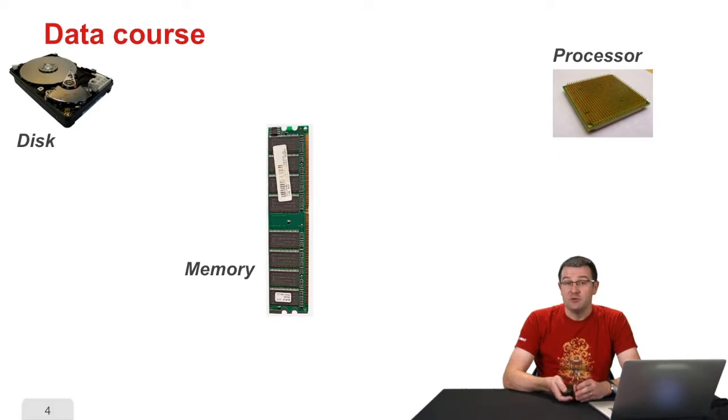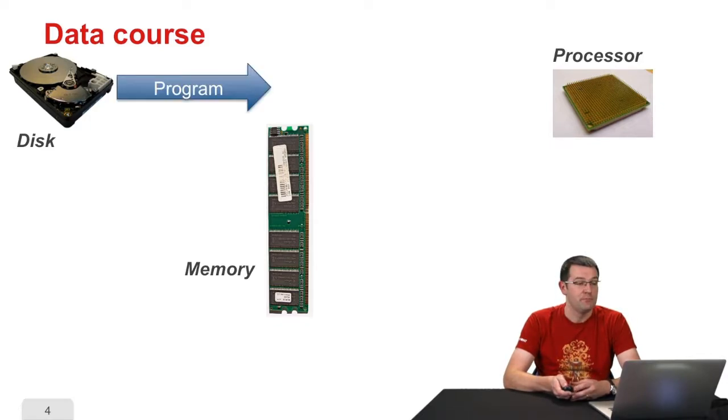So we start with data coming from the hard drive, that's where programs can be found, and their data. When the computer starts, the processor doesn't know what to do, so it is going to get instructions from the hard drive. So it's going to load the program in the memory and start executing it. In addition to loading the program, the processor will also load in the memory the data it needs. For example, if it was asked to display an image, it is going to load that image in the memory before trying to display it.